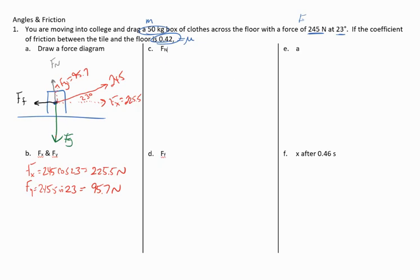The next thing I would look at is what is this normal force going to be? In order to find that, I have to know what the force of gravity is. Although I'm not given the force of gravity, I can easily find that by taking the mass 50 times the acceleration of gravity 9.8. I'm going to get 490 newtons. In the up and down direction, all the forces have to cancel out. The normal force is going to be equal to the gravity minus the Y component: 490 minus 95.7, giving me a normal force of 394.3.